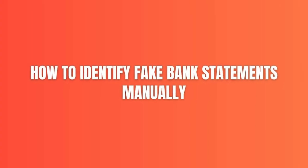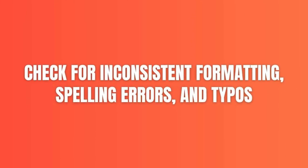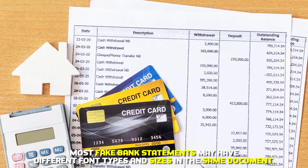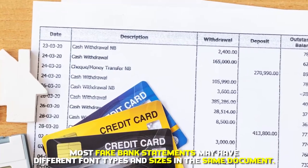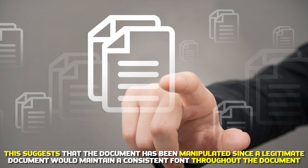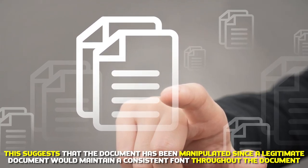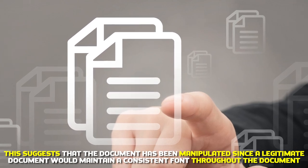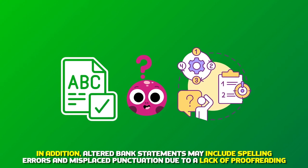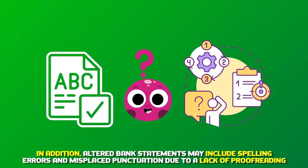How to identify fake bank statements manually. Check for inconsistent formatting, spelling errors, and typos. Most fake bank statements may have different font types and sizes in the same document. This suggests that the document has been manipulated, since a legitimate document would maintain a consistent font throughout. In addition, altered bank statements may include spelling errors and misplaced punctuation due to a lack of proofreading.